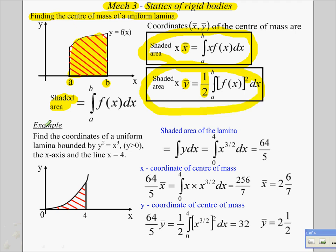Let's look at a little example. I have a uniform lamina bounded by this curve here and the line x equals 4 and the x axis. So I want the coordinates of the center of mass. It doesn't actually say it there, but that's what I meant.